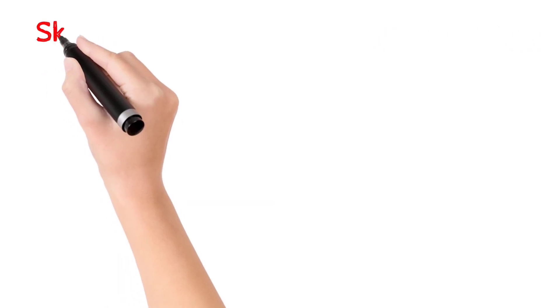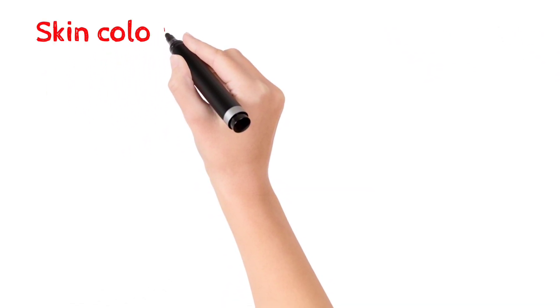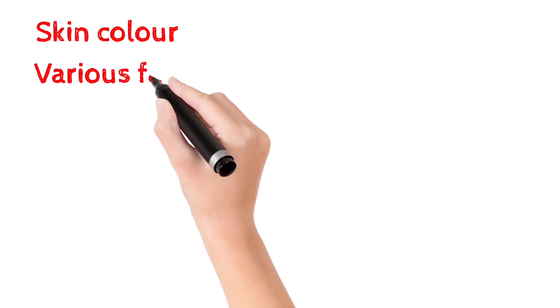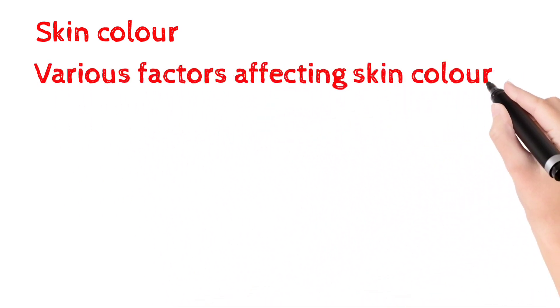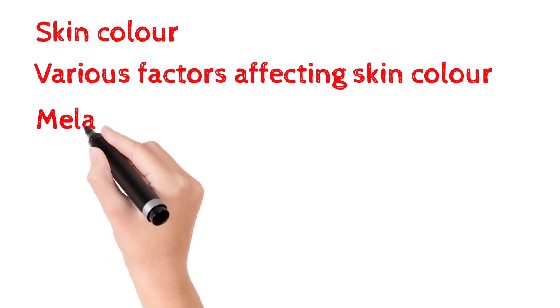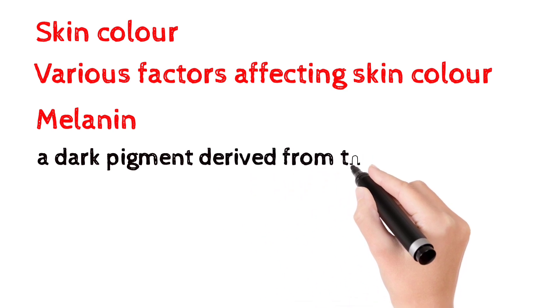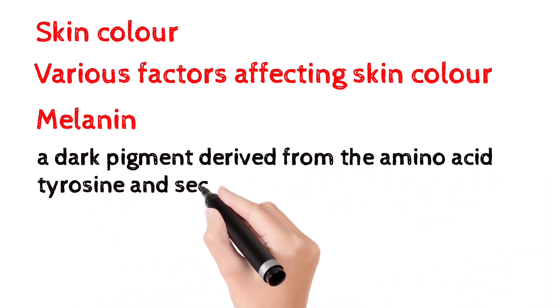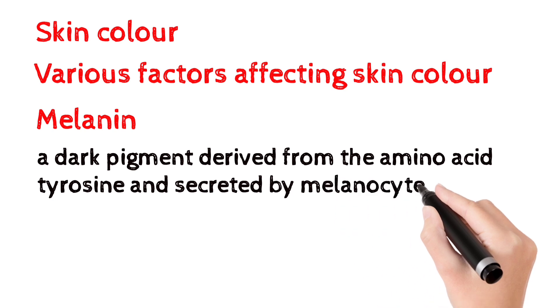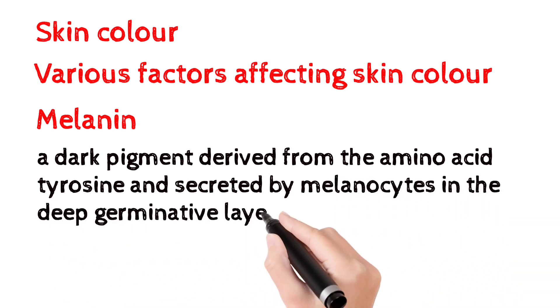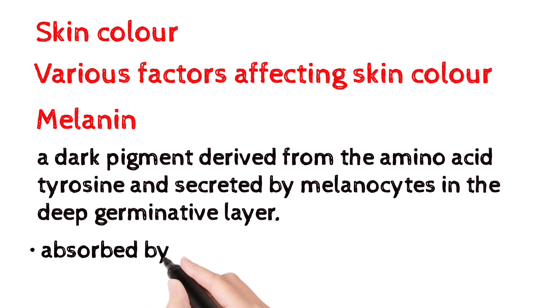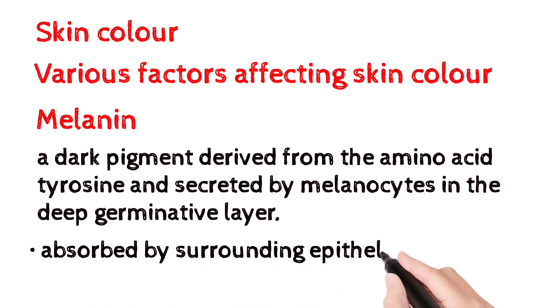Skin color varies due to various factors. The main factor is melanin. Melanin is a dark pigment derived from the amino acid tyrosine and secreted by melanocytes in the deep germinative layer. This determines pigmentation.